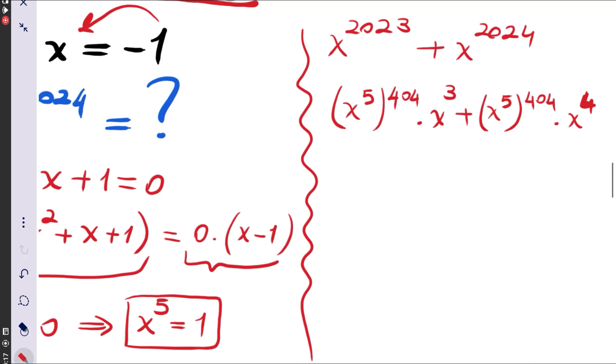Now since we have found x to the power 5 is equal to 1, here is 1 times x cubed and 1 times x to the power 4. So we found that x to the power 2023 plus x to the power 2024 is equivalent to x cubed plus x to the power 4.